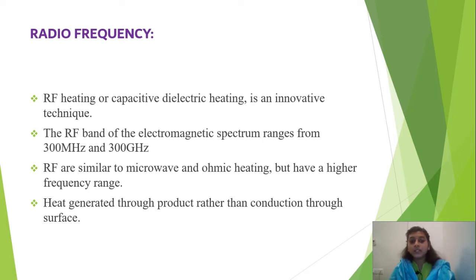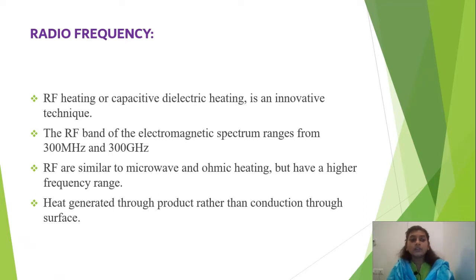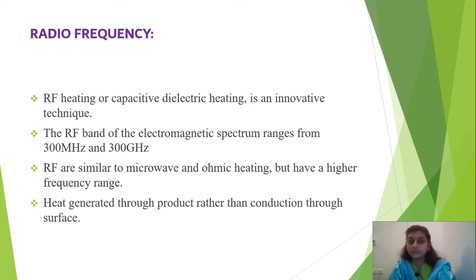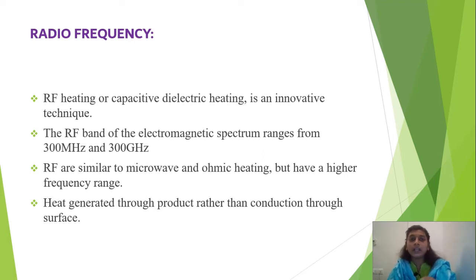RF is similar to microwave and ohmic heating, but has a higher frequency range. In microwave and ohmic heating there is dielectric heating — heating from the molecular level to the outer side. The processes are the same but RF has a higher frequency range. Heat is generated through the product rather than by conduction through the surface. In conventional tray drying, air circulates outside the surface first and then comes inside, whereas in RF, microwave, or ohmic heating, heating begins at the molecular level — the center — and then circulates outward.